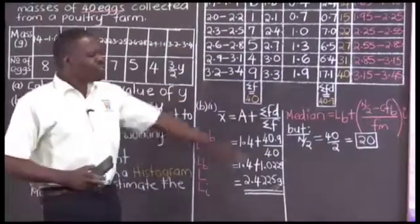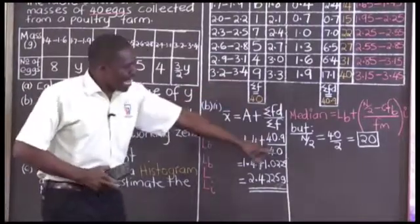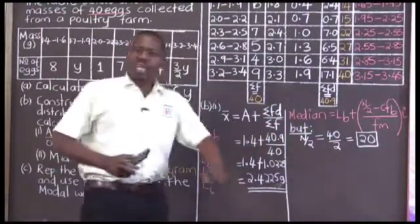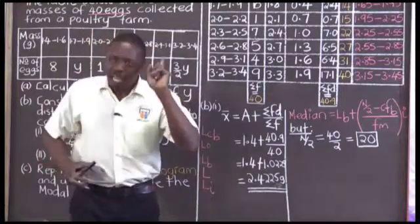Getting N divided by 2, after getting summation F divided by 2, the answer you get—like now we have got a 20—you get that 20, you go and correspond it on the cumulative frequency column.